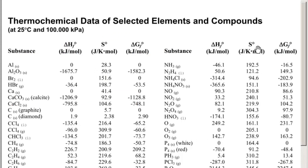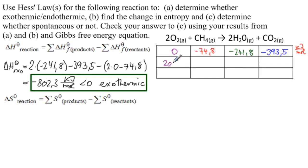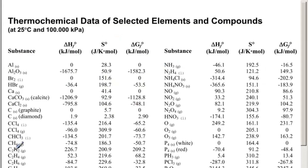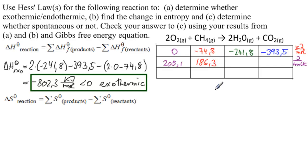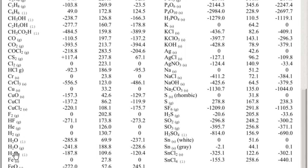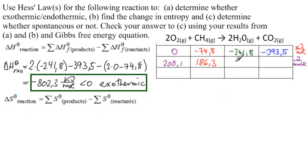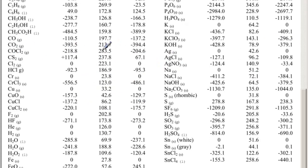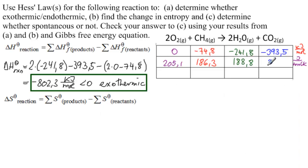Looking up our values: S° of O2 is 205.1 joules per mole kelvin. CH4 is 186.3 joules per mole kelvin. H2O gas, scrolling down the table, is 188.8 joules per mole kelvin. And CO2 is 213.7 joules per mole kelvin.